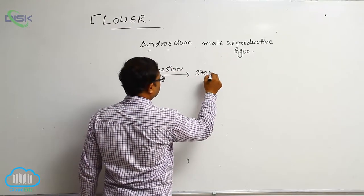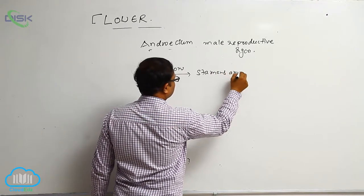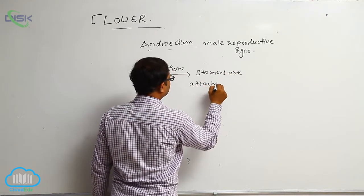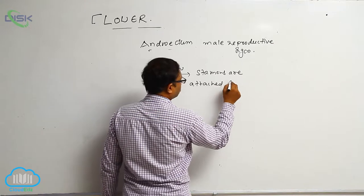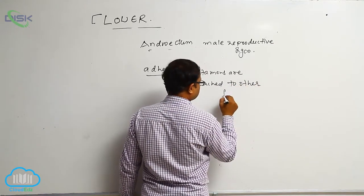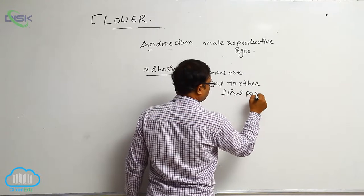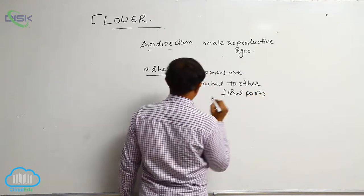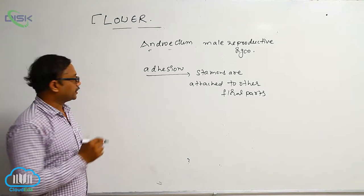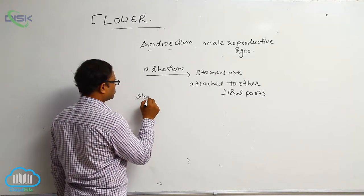Stamens are attached to other floral parts — that is known as adnation. So, in addition, for example, stamens.